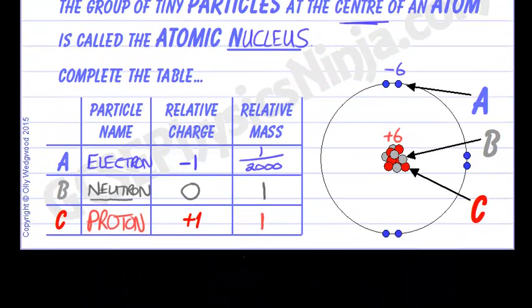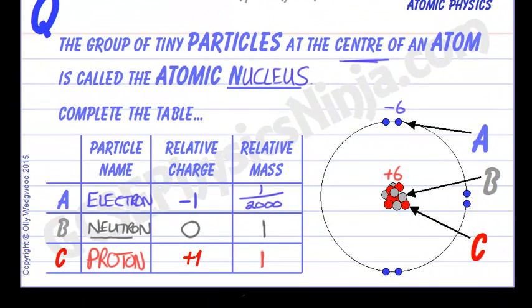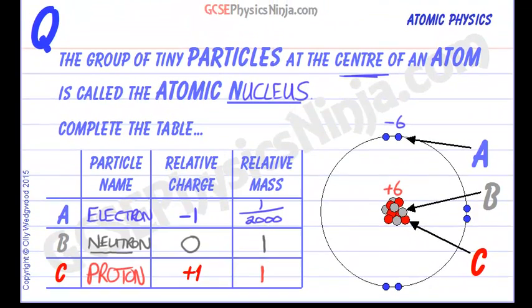So there is the structure of an atom. Remember that this is called the nuclear model, and the atomic nucleus is the group of particles at the very centre of an atom.